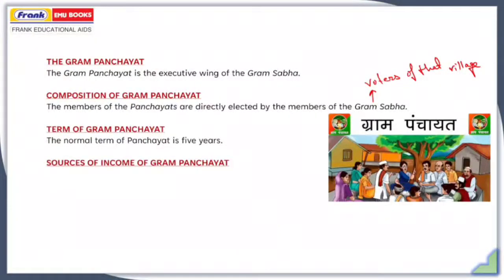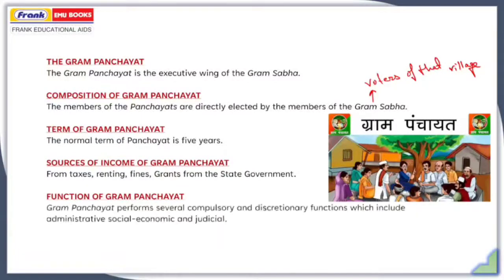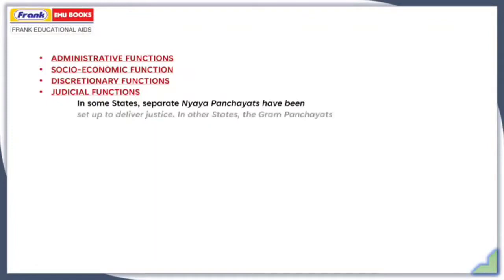The sources of income of Gram Panchayat include taxes, renting, fines, and grants from the state government. Gram Panchayat also needs to perform several compulsory and discretionary functions, which include administrative, social, economic, and judicial tasks — specifically administrative functions, socio-economic functions, discretionary functions, and judicial functions. In some states, separate Nyaya Panchayats have been set up to deliver justice, while in other states the Gram Panchayat does the job.